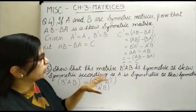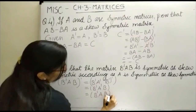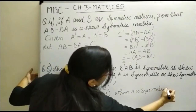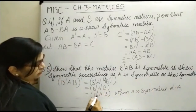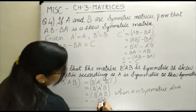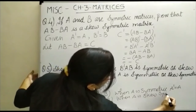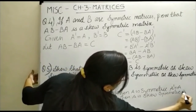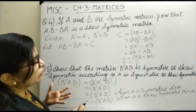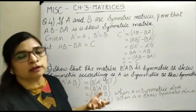We started from B transpose A B and obtained B transpose A transpose B after transposing. Now, when A is symmetric, A transpose equals A, so the transpose of B transpose A B equals B transpose A B itself. When A is skew symmetric, A transpose equals minus A, so the transpose equals minus B transpose A B. This shows that if A is symmetric then B transpose A B is symmetric, and if A is skew symmetric then B transpose A B is skew symmetric. Thank you.